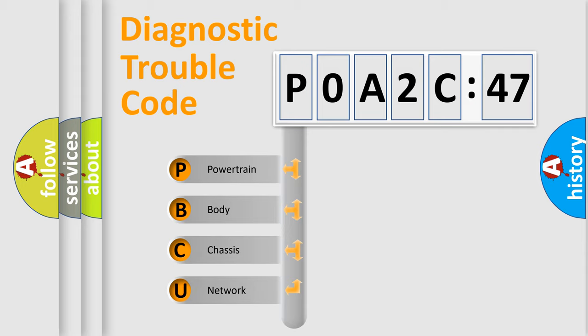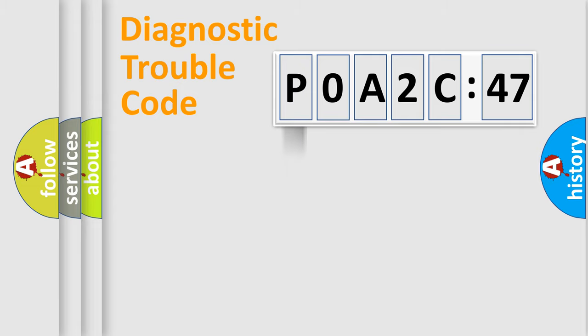If the second character is expressed as zero, it is a standardized error. In the case of numbers 1, 2, or 3, it is a more precise expression of the car specific error.